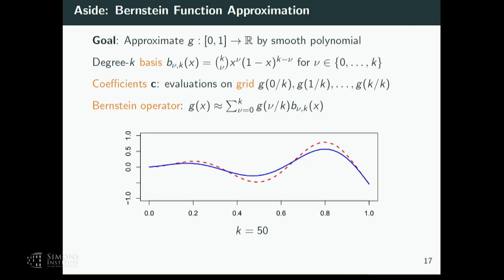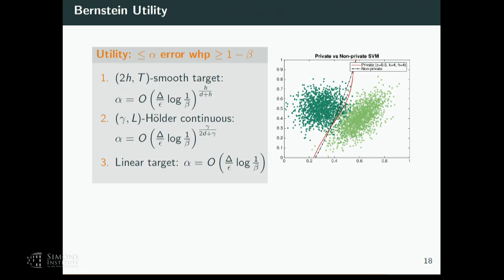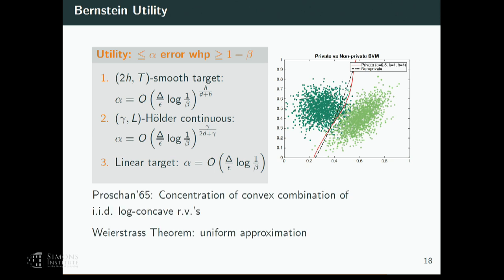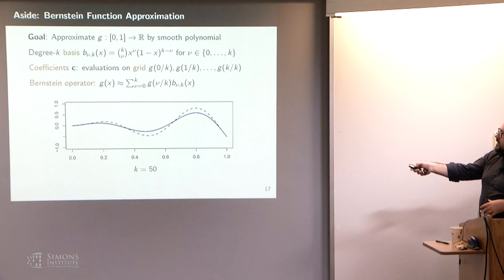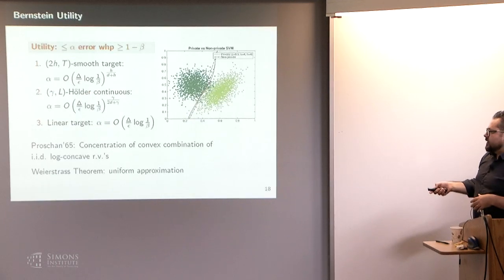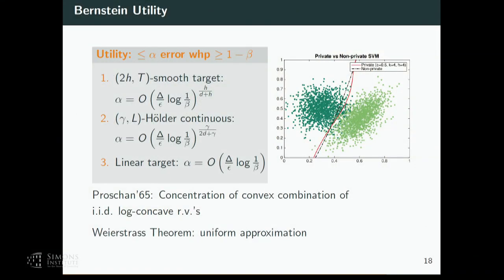The Bernstein operator — how to reconstruct the function in this basis — is just a linear combination of these basis functions, like an expectation: taking a binomial random variable and the expectation with respect to that random variable of G, where the distribution of the binomial variable depends on the test point. You get pure DP if you know sensitivity. You also get utility via a concentration result by Proshan. The utility comes from the convex combination using the Weierstrass theorem — the approximation within the basis is close to the original. Depending on what you assume about smoothness, you get some utility, though it doesn't scale that nicely in dimension.